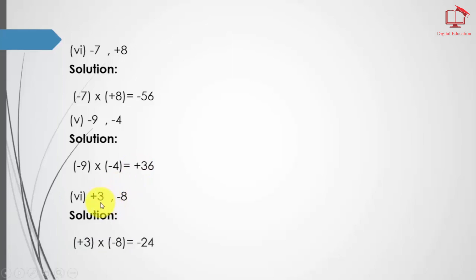Part number 6: 8 times 3 equals 24; 8 times 1 equals 8; 8 times 2 equals 16; 8 times 3 equals 24 — the right answer is 24, and plus times minus equals minus.